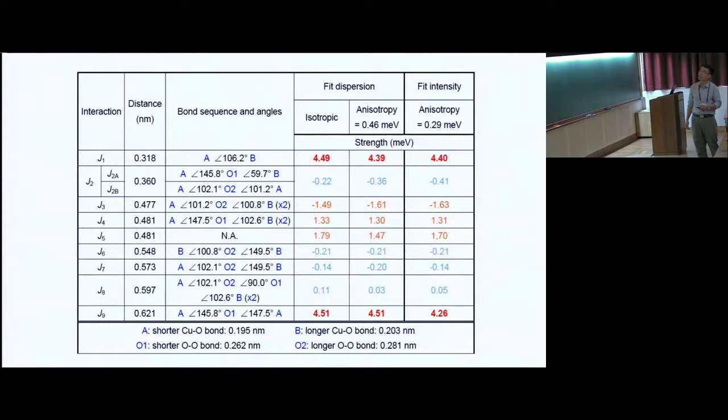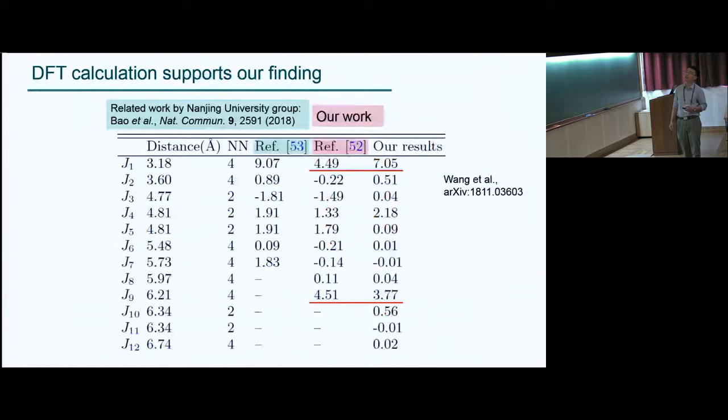Now, this is the table for all the interactions, and it turns out that only J1 and J9 are very big, and everything in between is much smaller. And as you can see from the bond angle, only this one is a very straight bond, and everything here involves at least one angle, which is close to 100 degrees. And that's why all these interactions are not so strong.